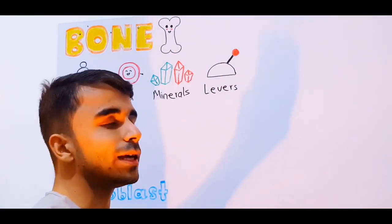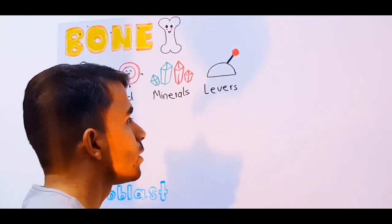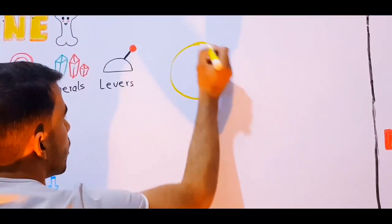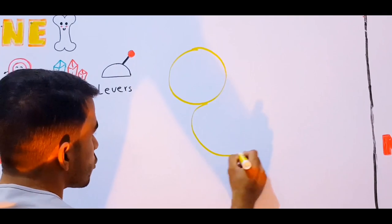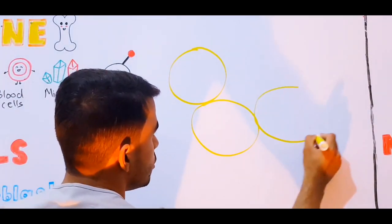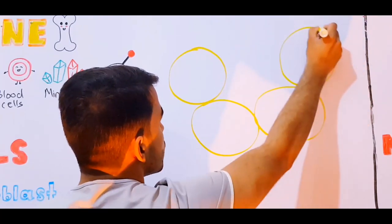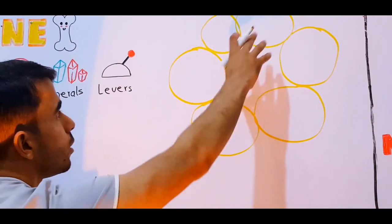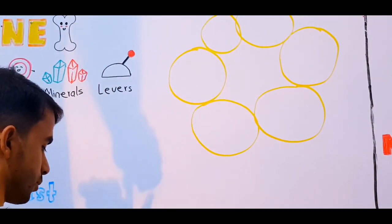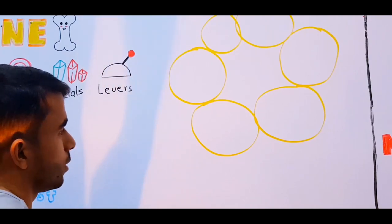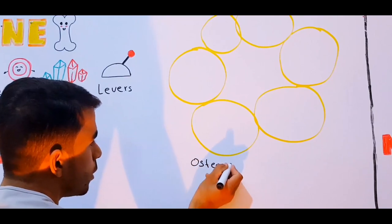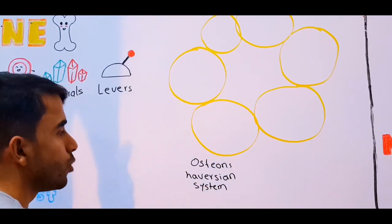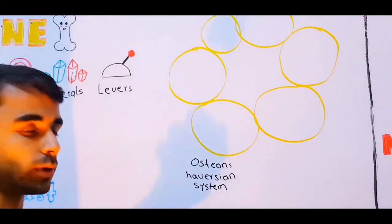The bone tissue is made out of these structural units called osteons, also known as Haversian systems. These are the fundamental structural units of your bones.